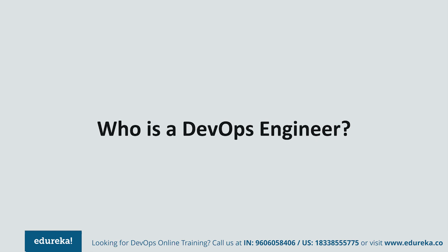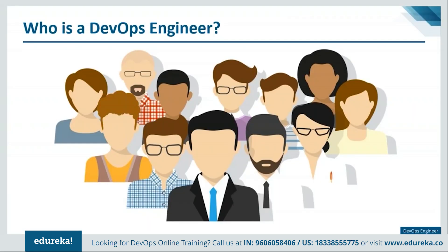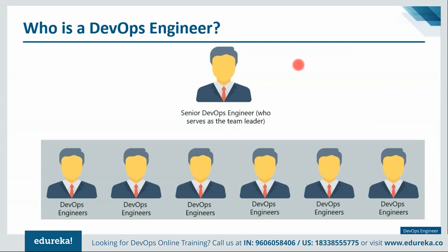A dedicated DevOps team consists of a few professionals who are each responsible for different elements. There are two main roles in the team: the senior DevOps engineer, who serves as a team leader, and the DevOps engineer. The senior DevOps engineer architects and plans the complete delivery process as well as which tools will be used, supervising overall operations and understanding the entire environment. The other engineers are responsible for implementing and maintaining that delivery process.